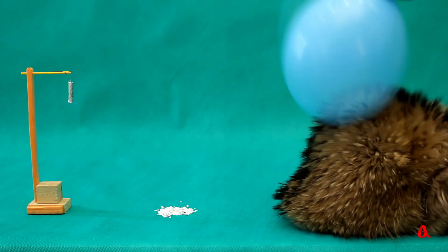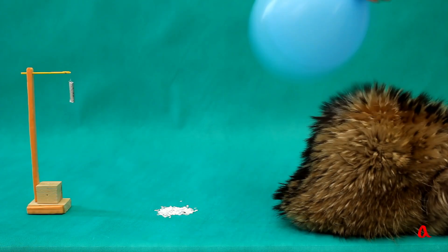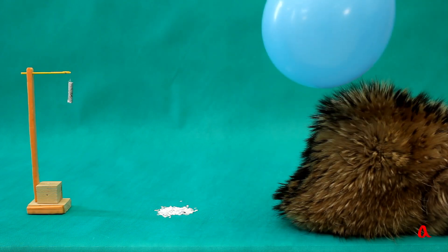We rub a balloon against a fur hat and bring it close to shredded paper. Its small pieces go up into the air and stick to the balloon. This means the shredded paper is affected by forces which are called electrical.